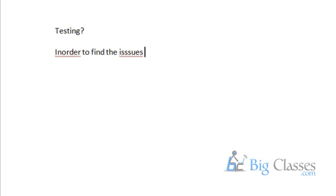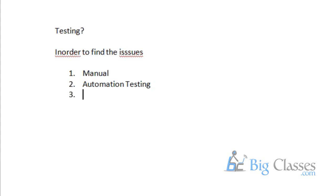To find issues on the application, we have two ways available in the market: one is manual testing and another one is automation testing. Both manual and automation testing are specific to functional testing. So for doing functional testing, we have two methods — manual and automation.